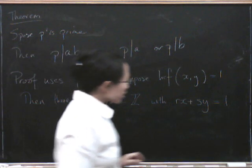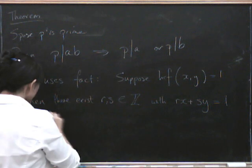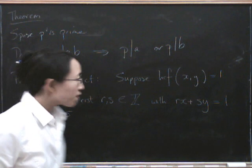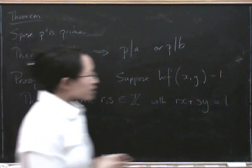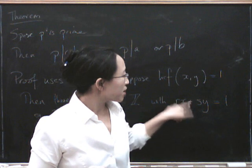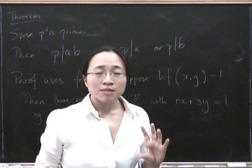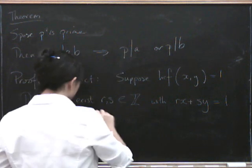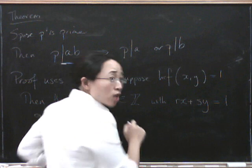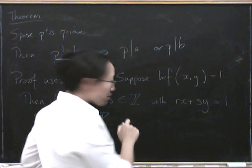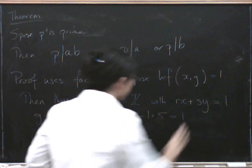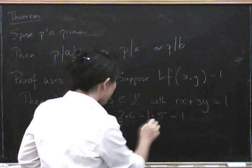So let's think about this for a second. For example, if we had 3 and 5, the highest common factor of 3 and 5 is 1. So how can we get some number of 3's together with some number of 5's? This can be minus, right, because s is an integer. It doesn't have to be a natural number. Can we get some number of 3's plus some number of 5's to get 1? Well, we can, because we could say we could do 2 times 3 minus 1 times 5 equals 1. So this is the r and this is the s.